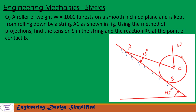A roller of weight W equal to 1000 lb is placed here and it is kept from rolling by a string AC, making an angle of 15 degrees with the inclined plane, and the inclined plane is at 45 degrees from the horizontal. In this problem, we need to find the tension in string AC and the reaction of the plane at B using the method of projections.